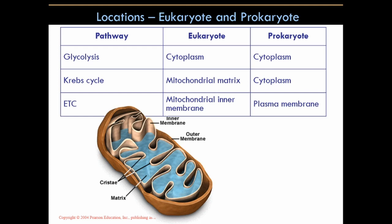The ETC takes place in eukaryotic cells in the mitochondrial inner membrane, also called the cristae. It has large amounts of surface area with all these convolutions, bends, and folds, providing more functional area to make ATP and generate energy. In prokaryotes, it occurs in the plasma membrane, which does not have all these folds, so they have less functional surface area and will overall produce less ATP.